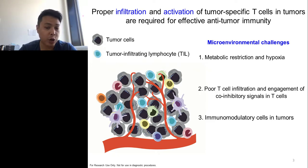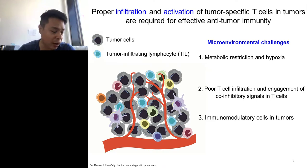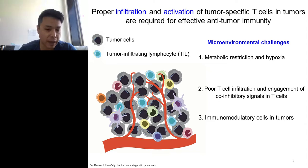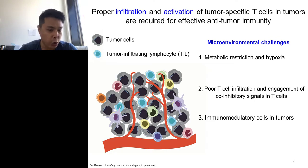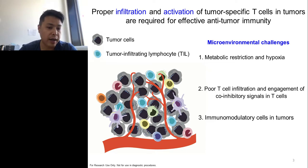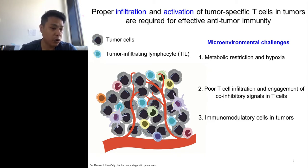Another microenvironmental challenge is poor T cell infiltration and engagement of co-inhibitory signals. These challenges can prevent proper T cell infiltration by manipulating vessel integrity. The expression of PD-L1 in cancer cells and other myeloid cells, plus other inhibitory receptors, can further dampen the anti-tumor response of T cells in the tumor microenvironment. A third challenge is the accumulation of immunomodulatory cells, including Tregs, myeloid-derived suppressor cells, M2 macrophages, and anergic dendritic cells, which support the formation of an immunosuppressive tumor microenvironment.